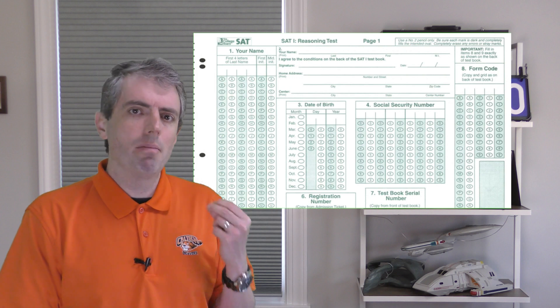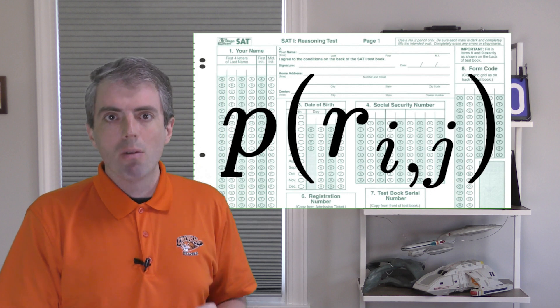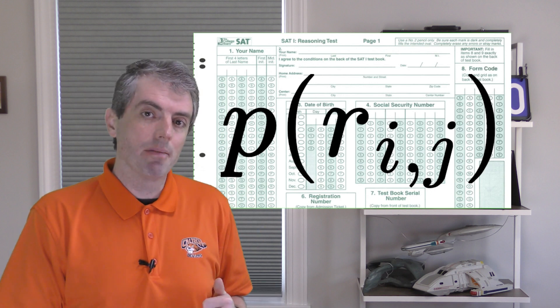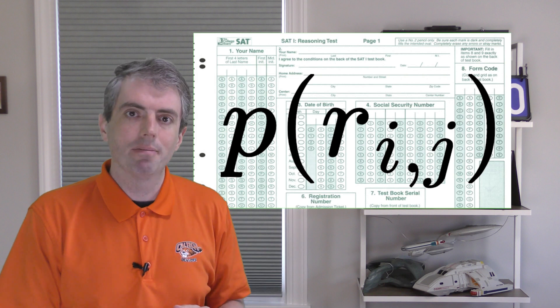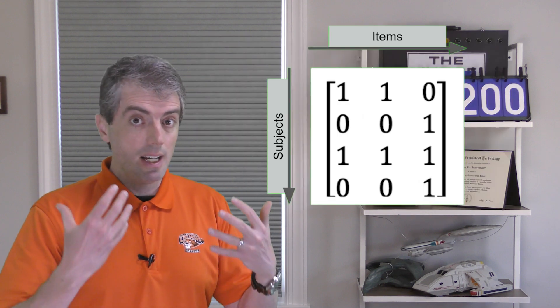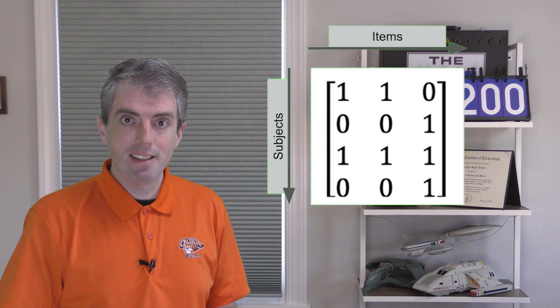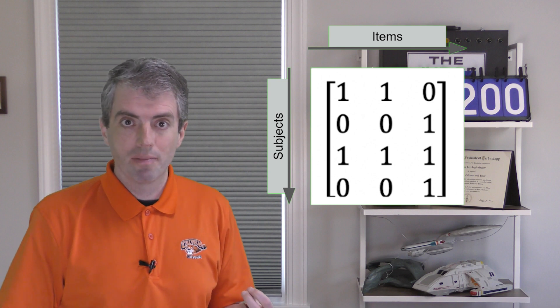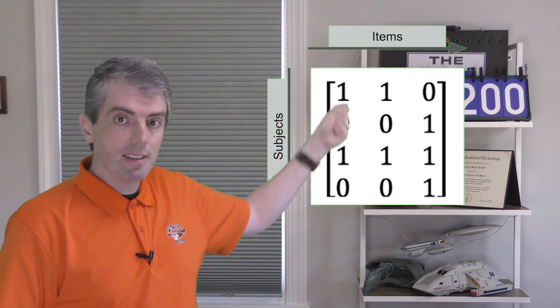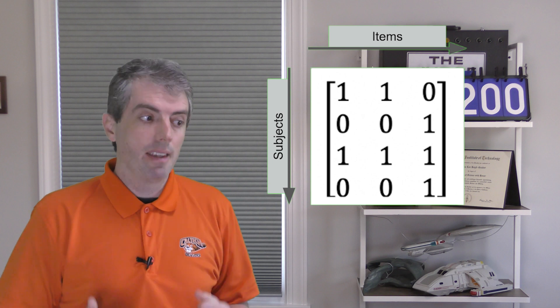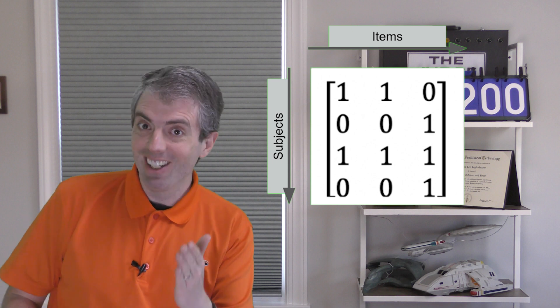The big idea is that we want to model the probability of person j getting question i right. We're going to treat this like a logistic regression. The data are a big matrix of who got what question right and who got what question wrong. In the lingo of item response theory, the questions are the items, the agents answering the questions are the subjects, and whether they got a question right or not is the response. So now hopefully you see why it's called item response theory.